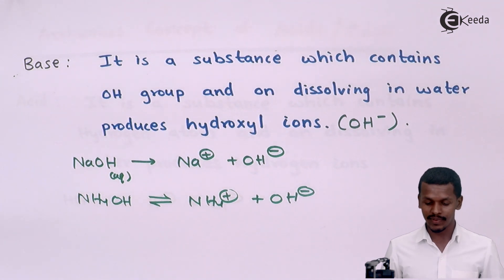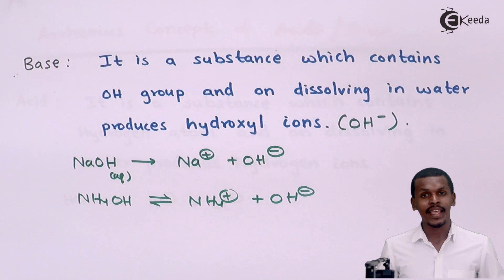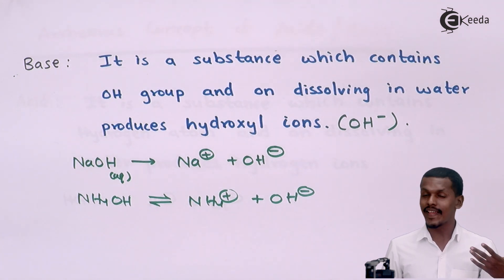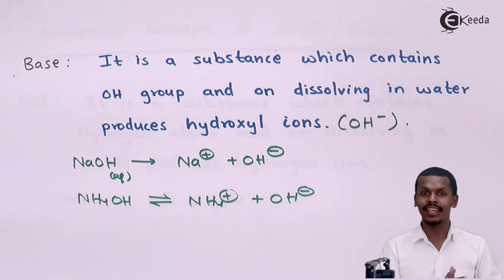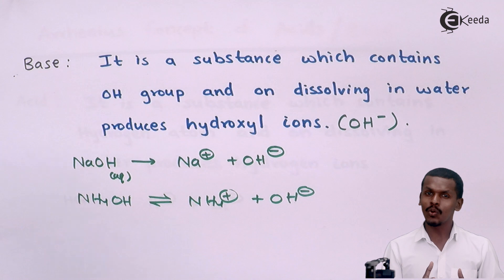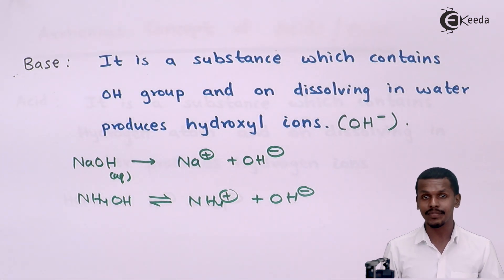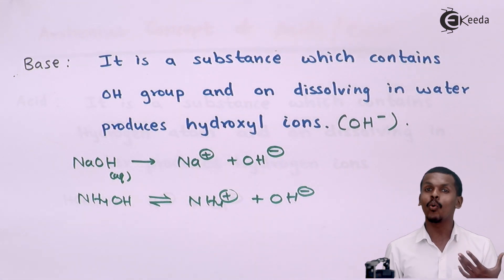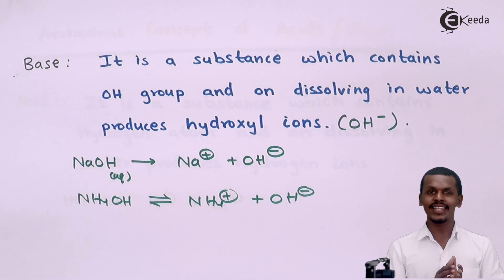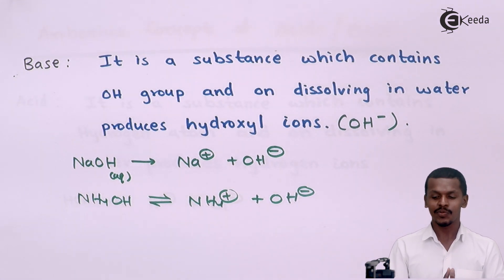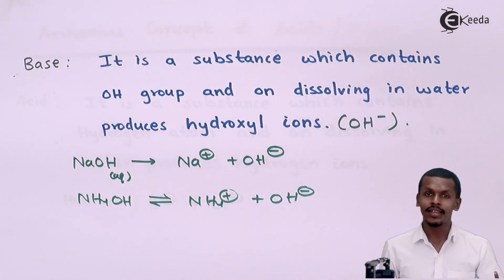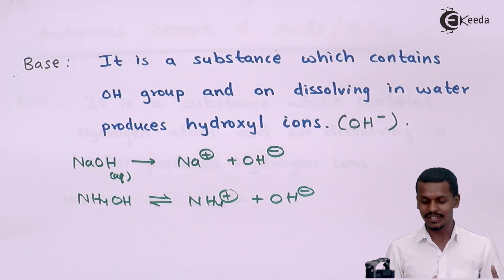But is the Arrhenius concept valid for everything? For example, AlCl₃ acts like an acid even though it does not have any hydrogen atom in it. And bases like ammonia (NH₃) or amines do not consist of OH⁻ but are still counted as bases. So these are the limitations of the Arrhenius theory — there are substances in nature that act like acids or bases but are not explained by this theory.